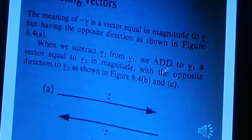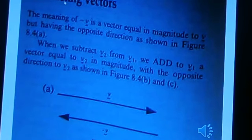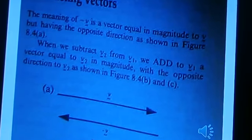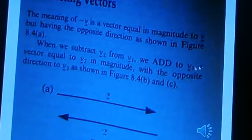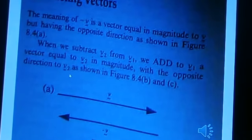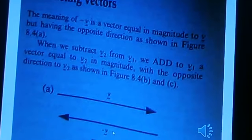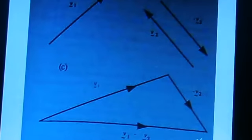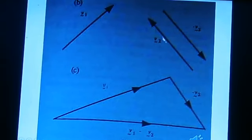Now for subtraction of vectors: negative V is equal in magnitude to V but having the opposite direction. So we subtract V1 minus V2. We can add V1 and the negative V2, so that we get V1 minus V2.